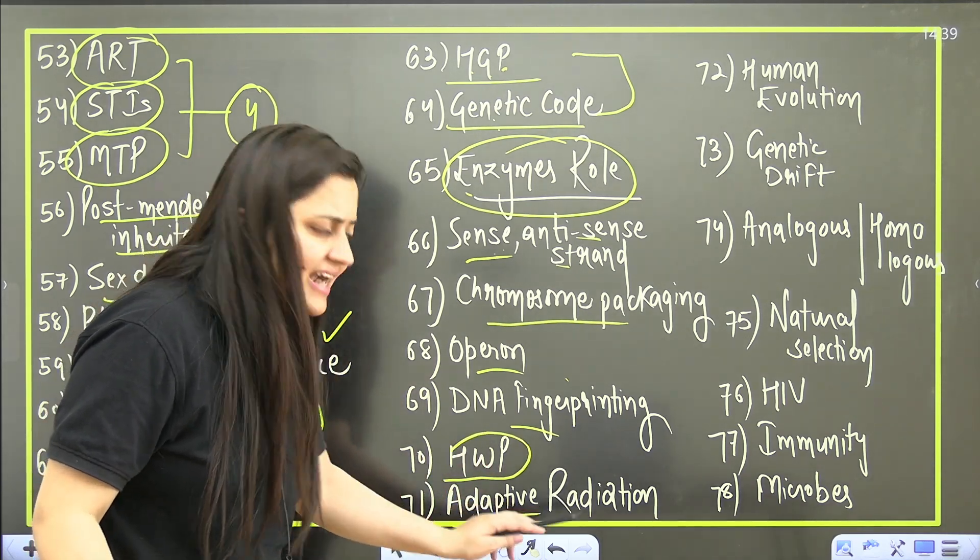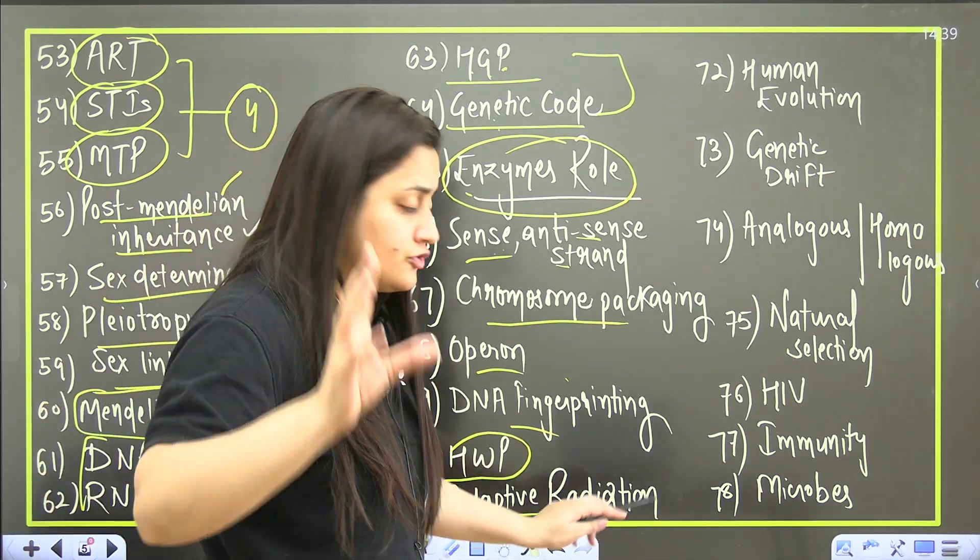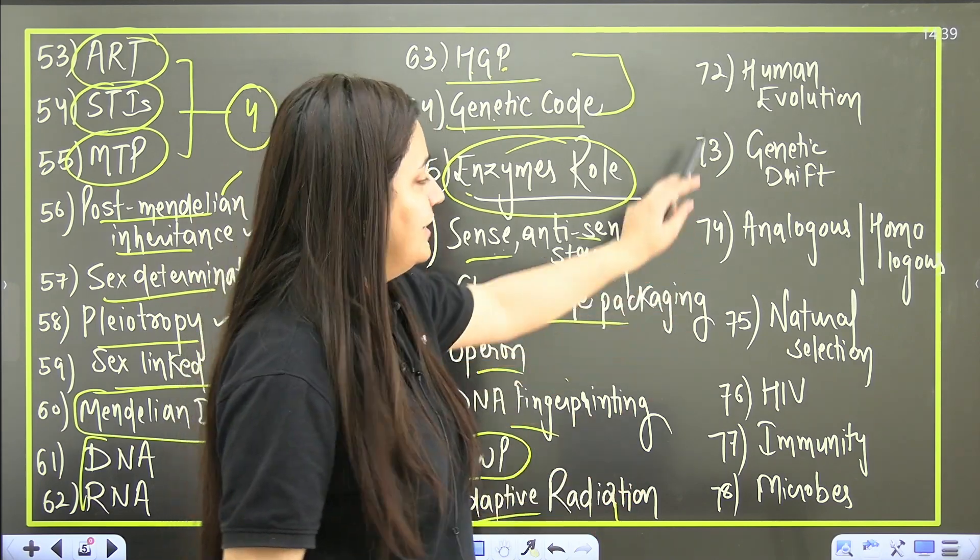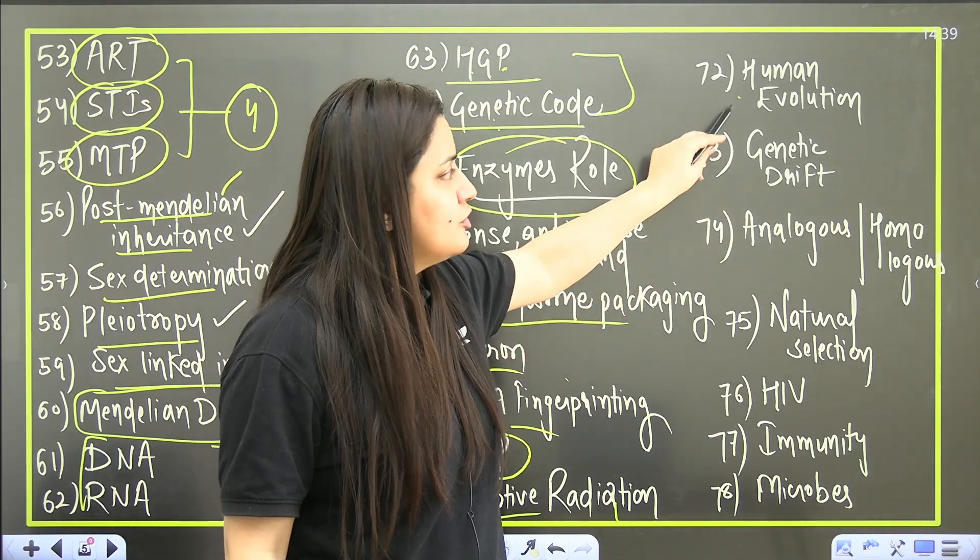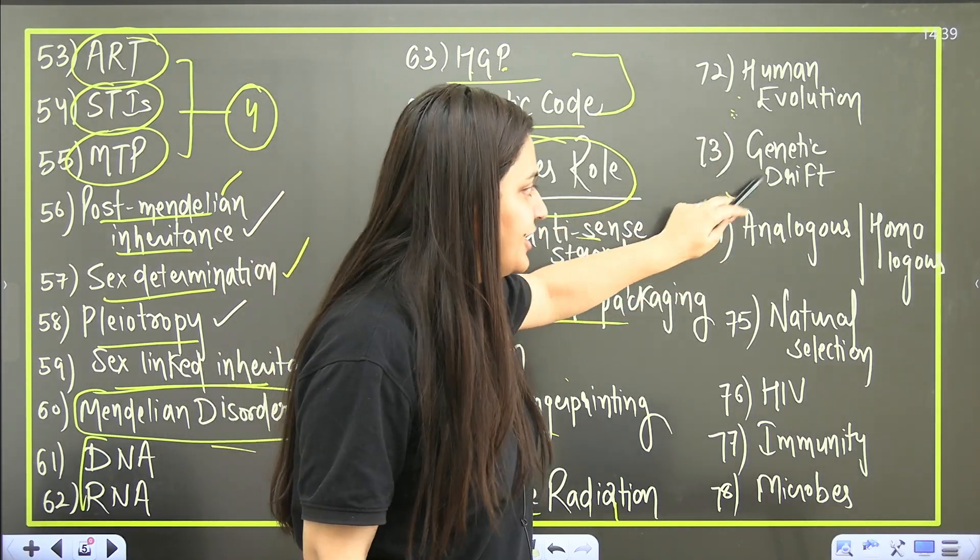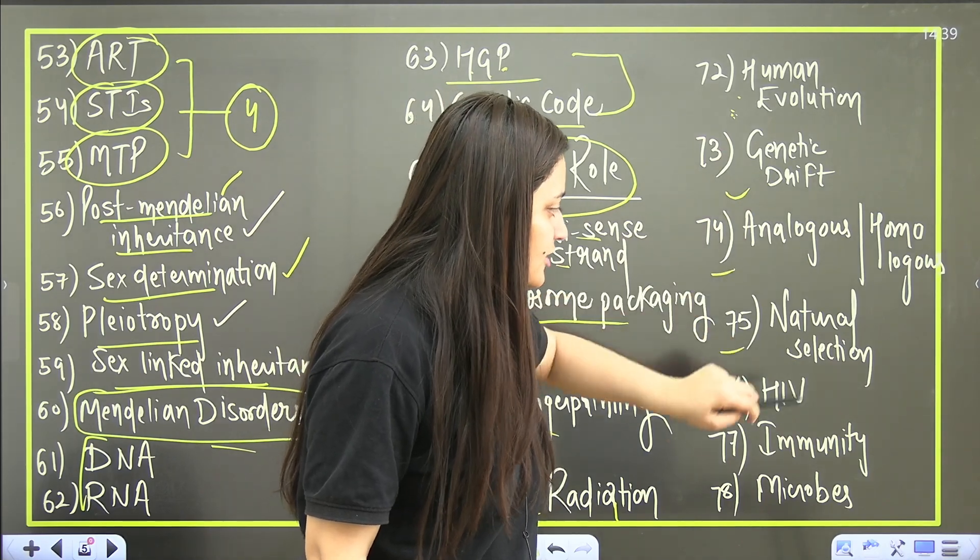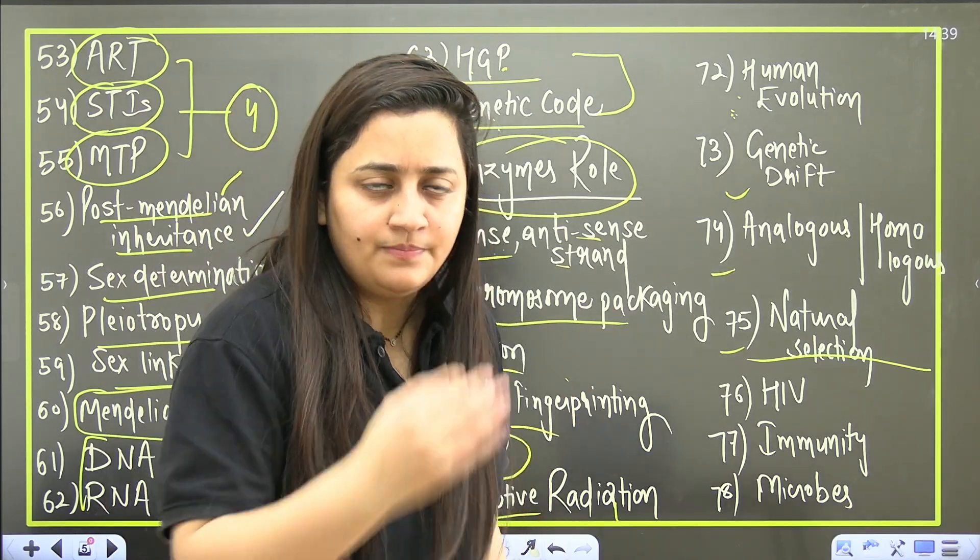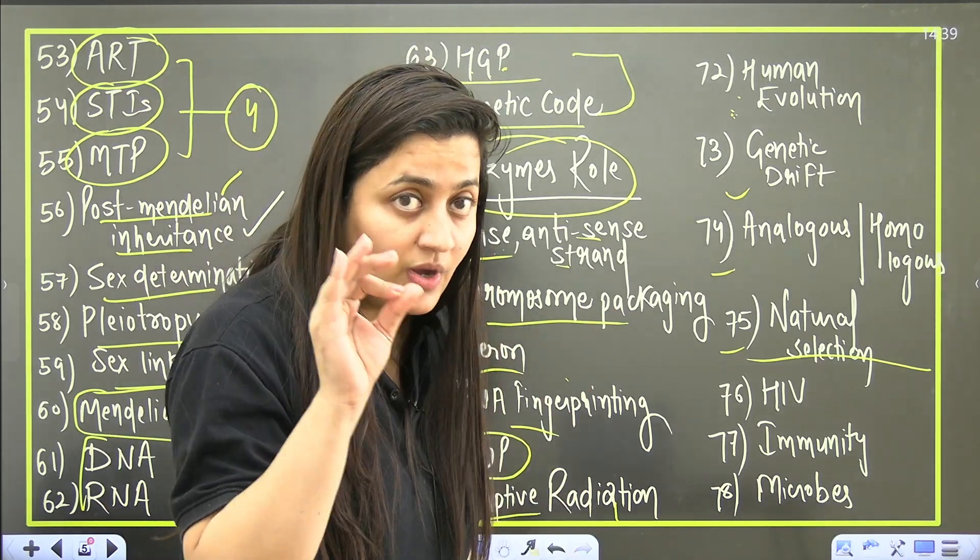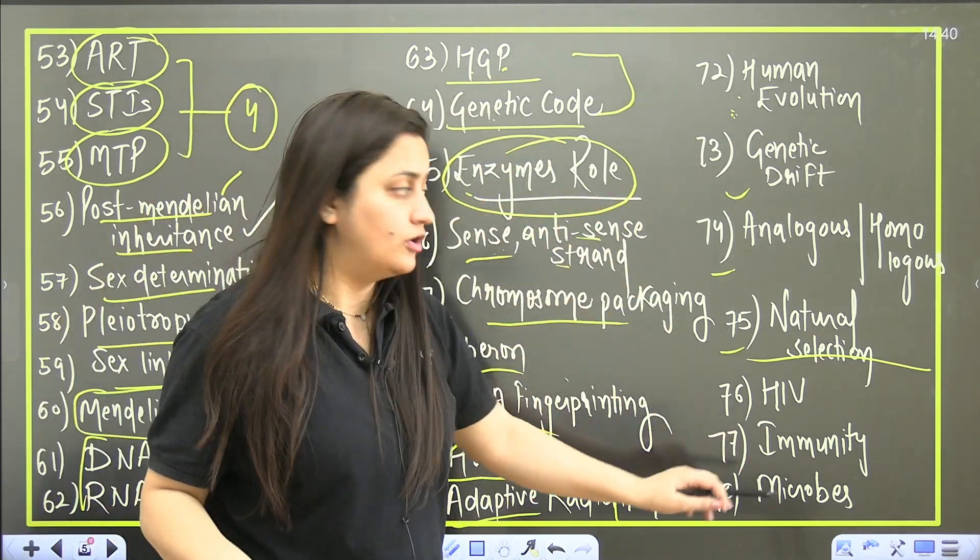Then your Hardy-Weinberg principle, adaptive radiation - one example will for sure come from this part for this particular year. Evolution of human - because even last year question was missing from this part, so you should not miss this topic for this year. Genetic drift, homologous, analogous, natural selection - students find it difficult to read the evolution. On this channel itself you will get the one shot. Do not miss these topics from the evolution part.